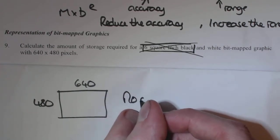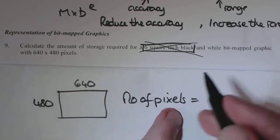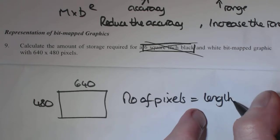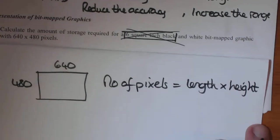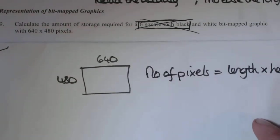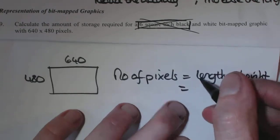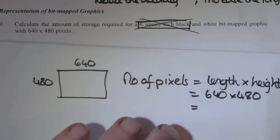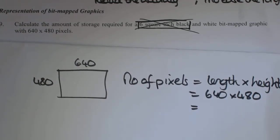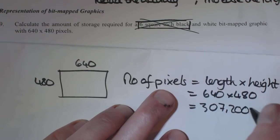So number of pixels, and that just equals the length and the height. So it's just the same as calculating the area of a rectangle. So what we've got is this equals 640 times 480. So 640 times 480, and that gives you 307,200 pixels.